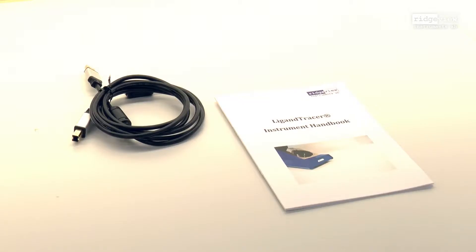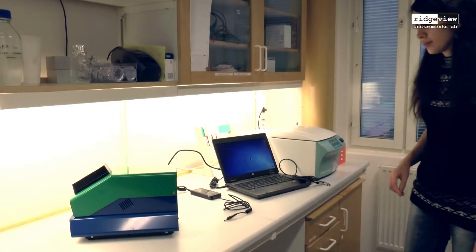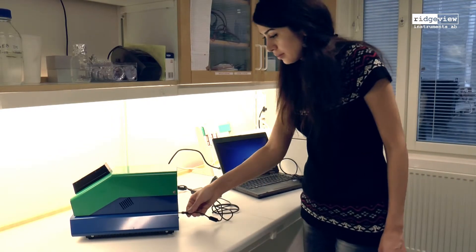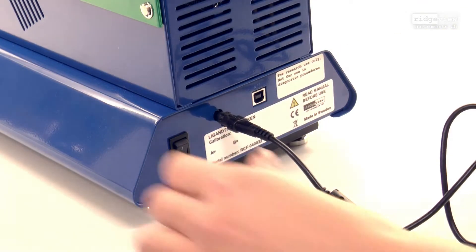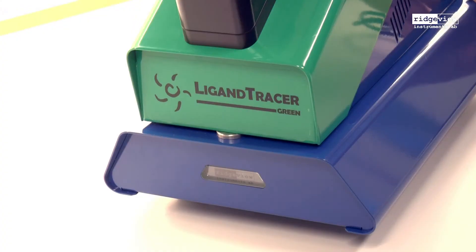Plug in the power cable into the power connector at the back of the instrument and press the power switch. The LigandTracer logo at the front is lit when the power is turned on.